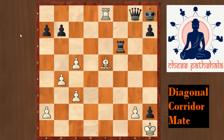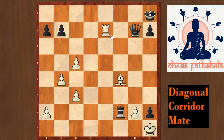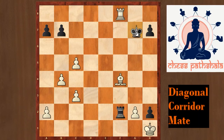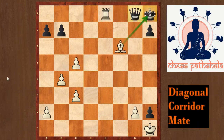After queen takes g7, queen takes g7, rook e8, black can also play queen f8, but then we just take that queen, and after king g7 we have the important discovered check bishop to h6, also guarding our rook on f8. Next move we pick up the rook. This is the example of corridor mate.